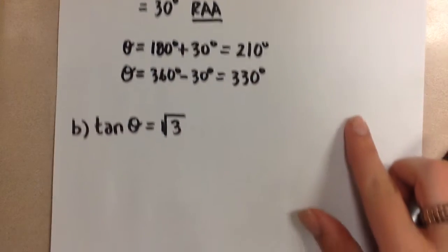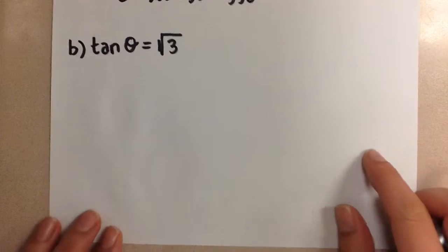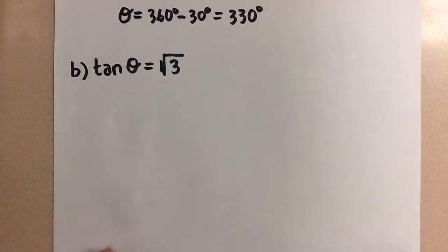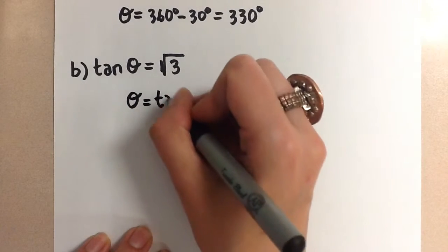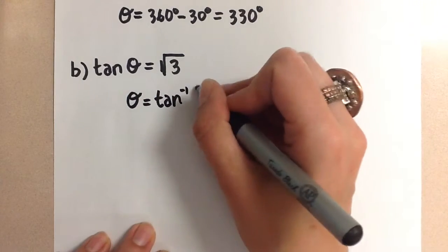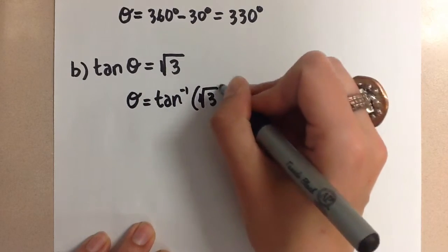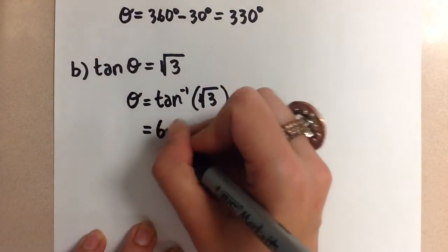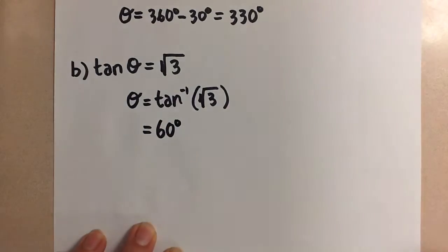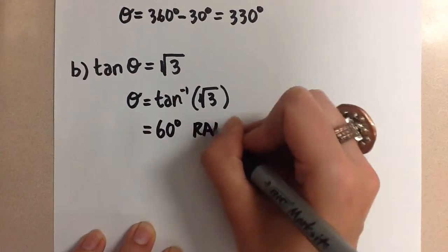So let's do that again now for this tangent theta equals root 3. So we're going to start in the same way, theta equals the inverse tangent of square root of 3 to see what our related acute angle is. When you do this we get 60 degrees for the related acute angle.